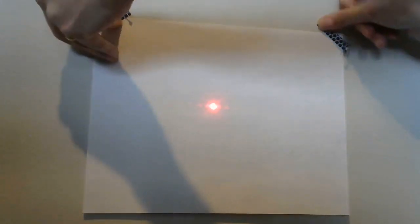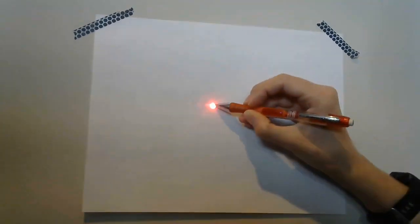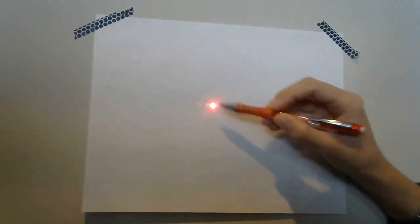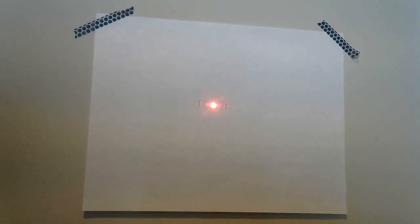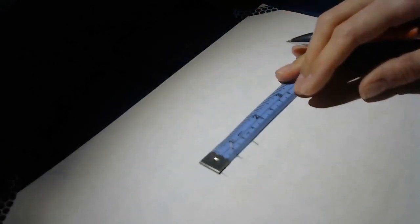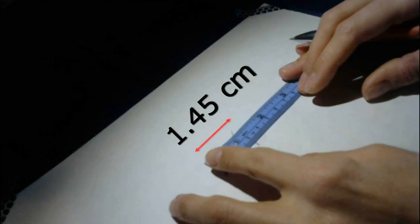Next, we need to measure the points on the diffraction pattern. To make this easier, I'm going to tape a piece of paper on the wall and mark the points where the laser is brightest. Now, I'll measure the distance between the center point and the next brightest point to one side. The distance between the brightest point and the next brightest point is 1.45 centimeters.